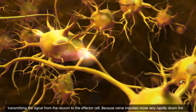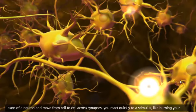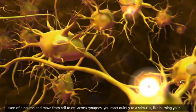Because nerve impulses move very rapidly down the axon of a neuron and move from cell to cell across synapses, you react quickly to a stimulus, like burning your finger.